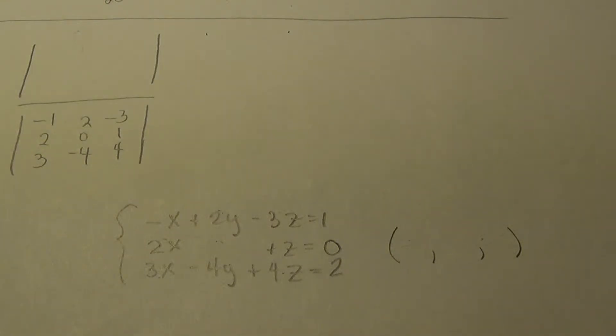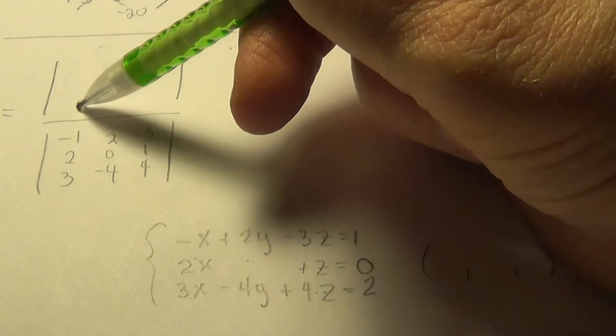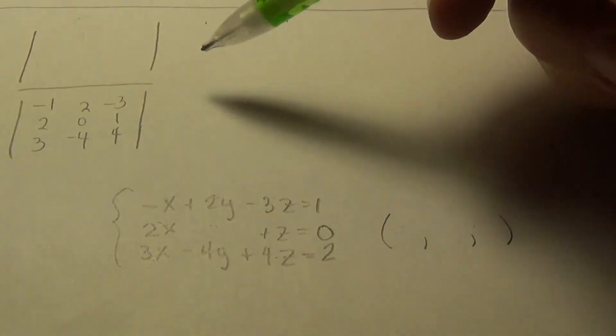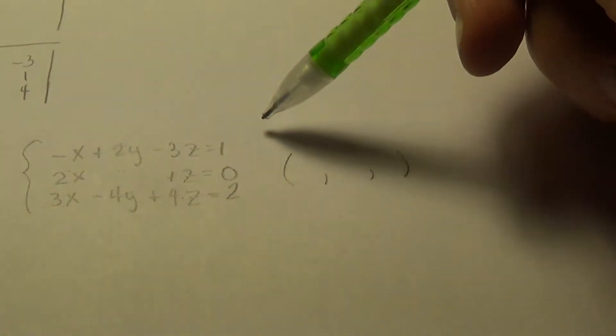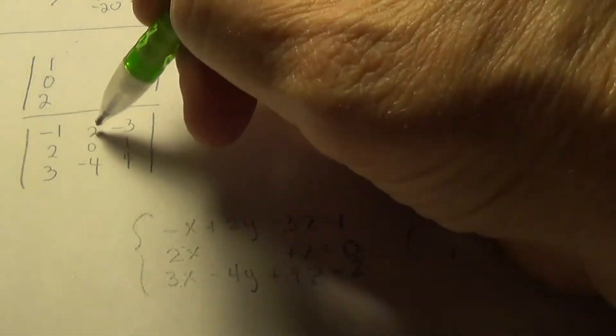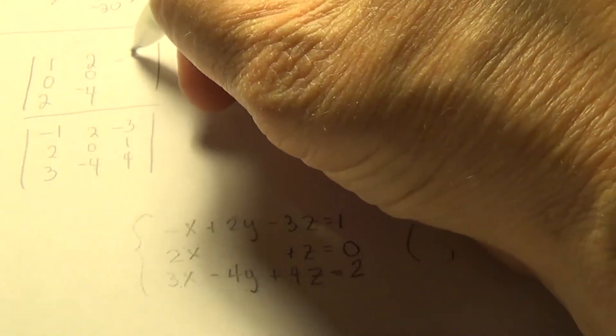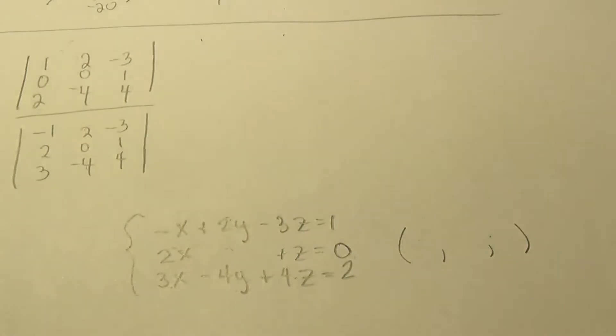So I'm going to get negative 1, 2, and 3. Here for y, I get 2, 0, negative 4. And for z, I get negative 3, 1, and 4. All right. So we're going to have to come up with that determinant. We'll work on that in a bit. Then for the top, remember, when we're solving for x, the constants take the place of the x terms, or the x coefficients. So 1, 0, 2 are the constants. So they're going to go in for x. And then the y will look just like that. And the z will look just like that.